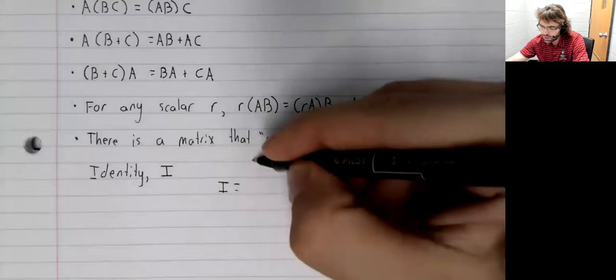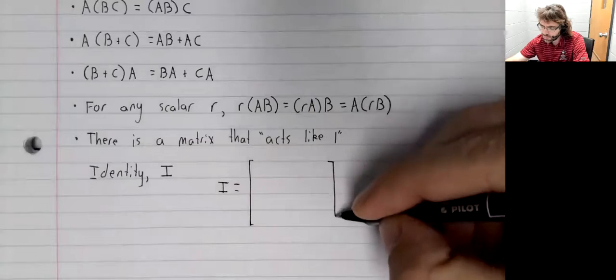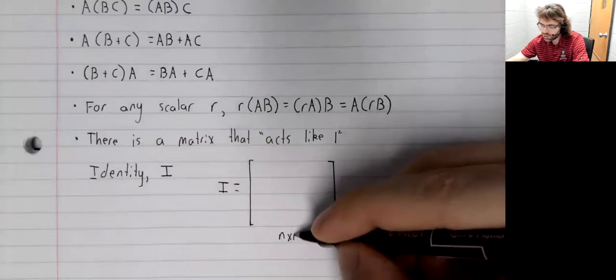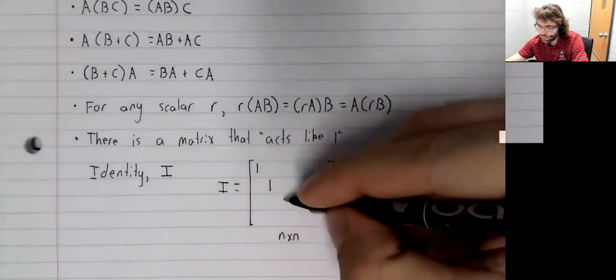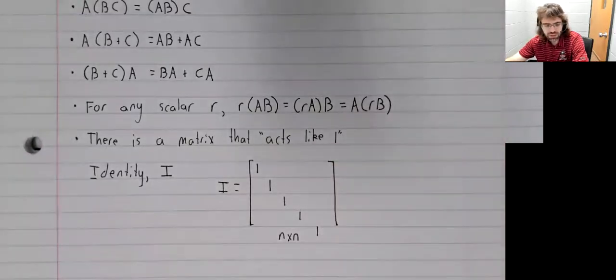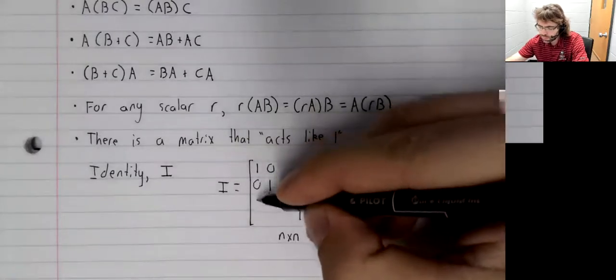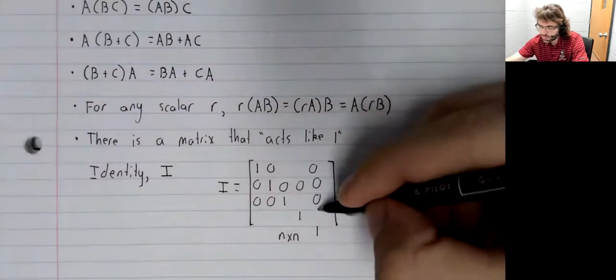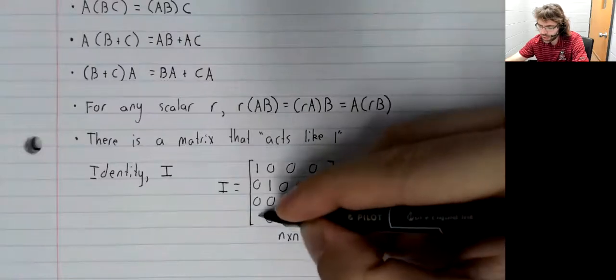The identity matrix is the square matrix that has ones going down its diagonal and is zero everywhere else.